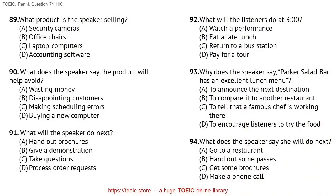Questions 89 through 91 refer to the following talk. Thanks for your interest in our innovative new accounting software. Are you reluctant to spend a fortune on an accountant to manage your finances for you? Have you ever tried to do it yourself only to find out that you've made a mistake that has cost you money? Then our software can help you. Its new and improved interface makes it easy for anyone to manage their money on their own without any accounting expertise. Let me show you how simple the program is to use. Number 89. What product is the speaker selling? Number 90. What does the speaker say the product will help avoid? Number 91. What will the speaker do next?